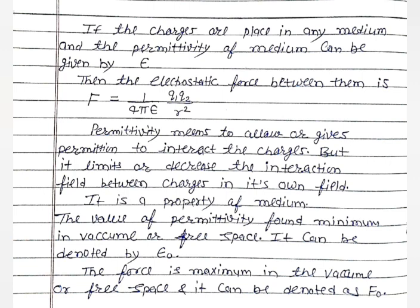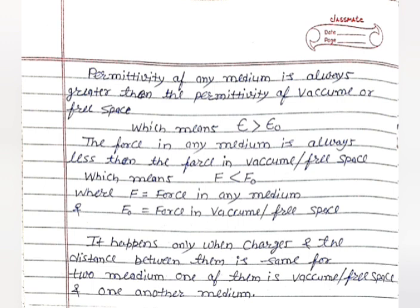Permittivity is a property of the medium. The value of permittivity is minimum in vacuum or free space, given by epsilon-naught, and the force is maximum in vacuum or free space, denoted as F₀. In short, in vacuum or free space, permittivity is minimum while force is maximum, because permittivity and force are inversely proportional to each other. The permittivity of any medium is always greater than the permittivity of vacuum or free space.